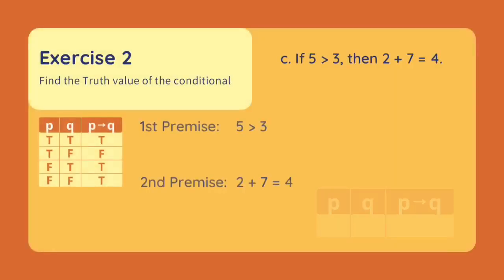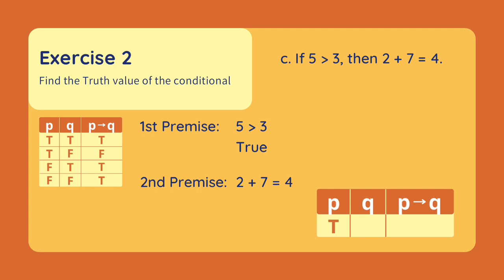Let's have a last one. If 5 is greater than 3, then 2 plus 7 equals 4. Our first premise is '5 is greater than 3.' This is true because 5 is indeed greater than 3. Our second premise is '2 plus 7 equals 4.' This is false because 2 plus 7 equals 9. Since our antecedent is true and our consequent is false, our conditional is false.